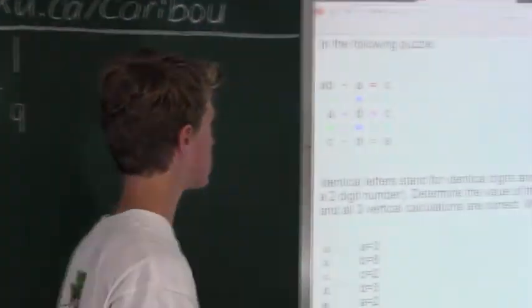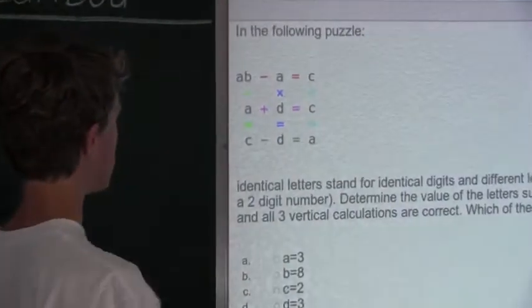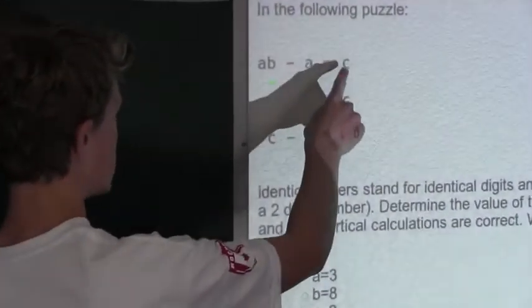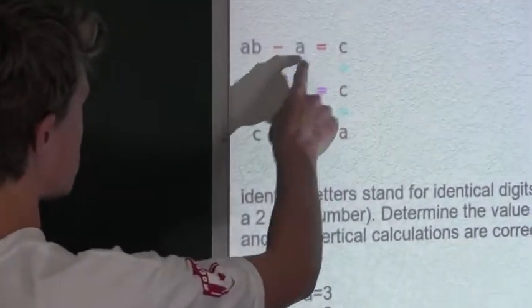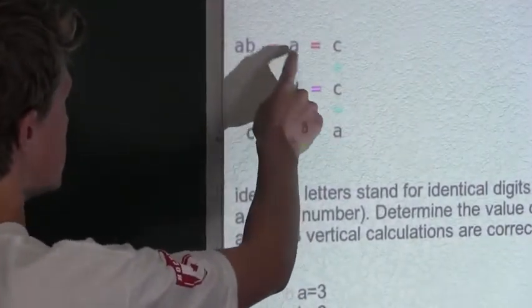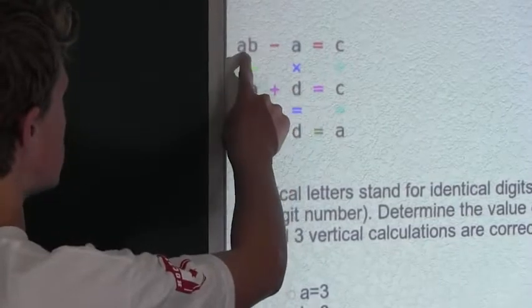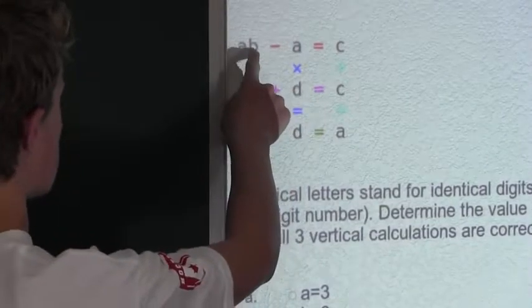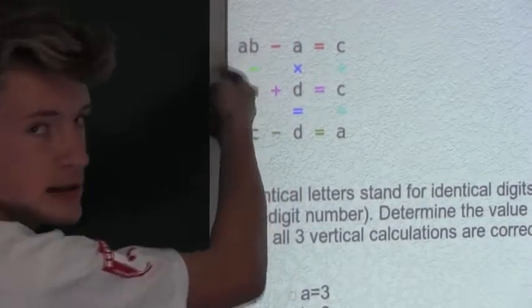Also, in the same equation, when we have C plus A, which is 9 plus 1 equals 10, we know that B must equal 0.